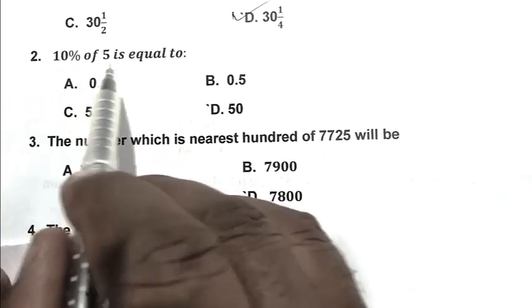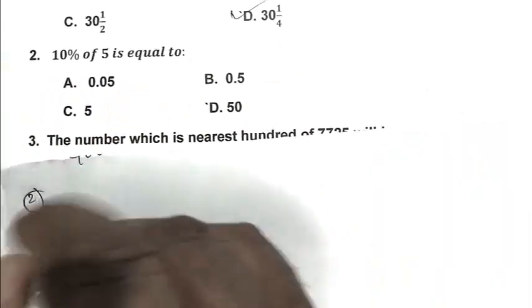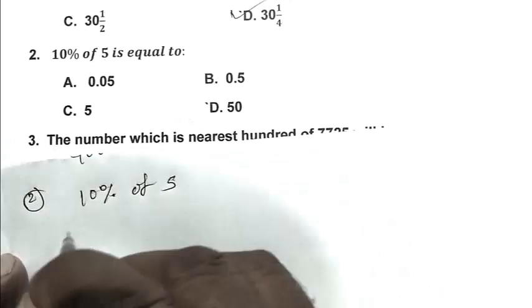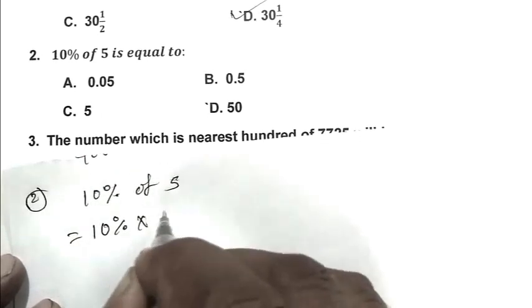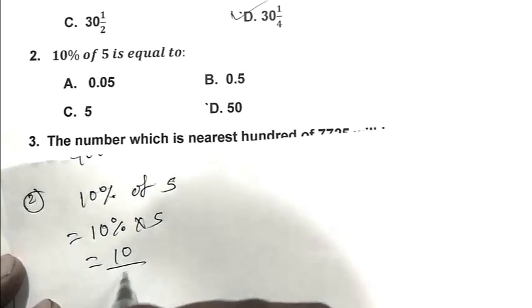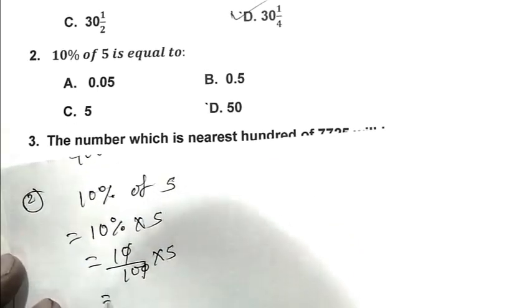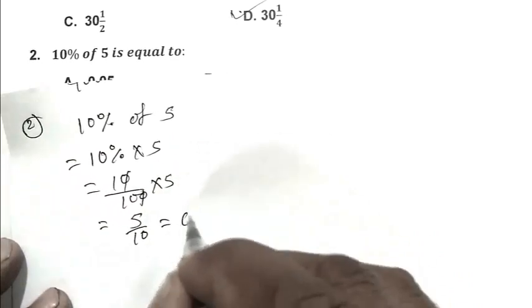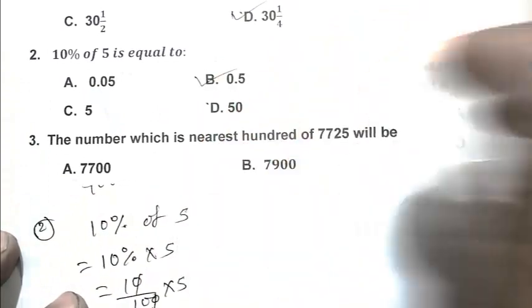Question number 2: 10% of 5 is equal to? So friend, 10% of 5, that is 10% multiplied by 5, that is 10 by 100 multiplied by 5, that is 5 by 10 or 0.5. So B is the right answer.